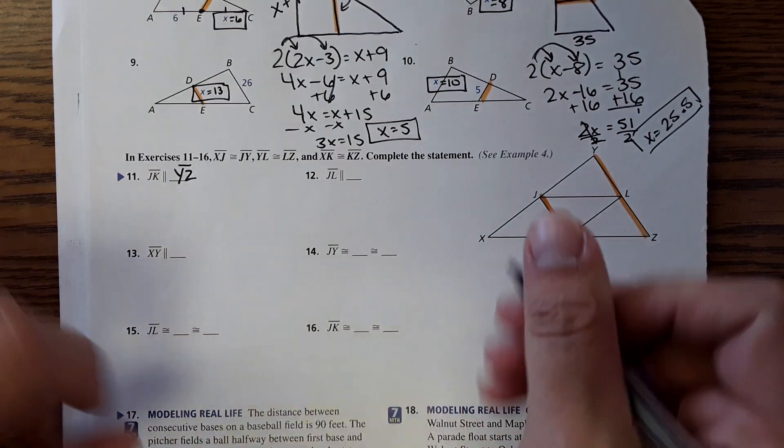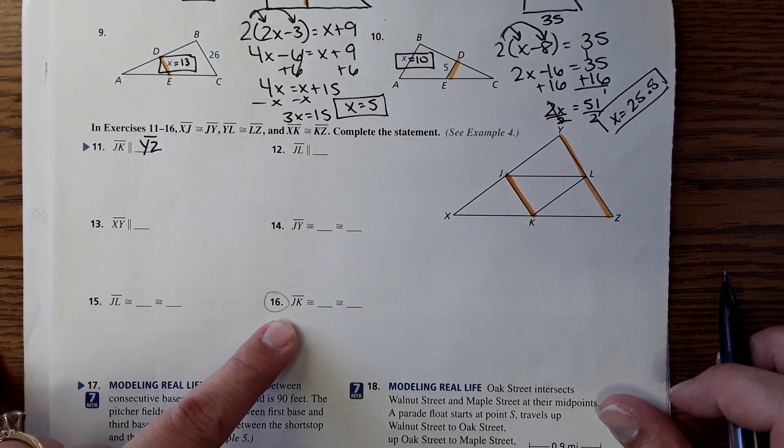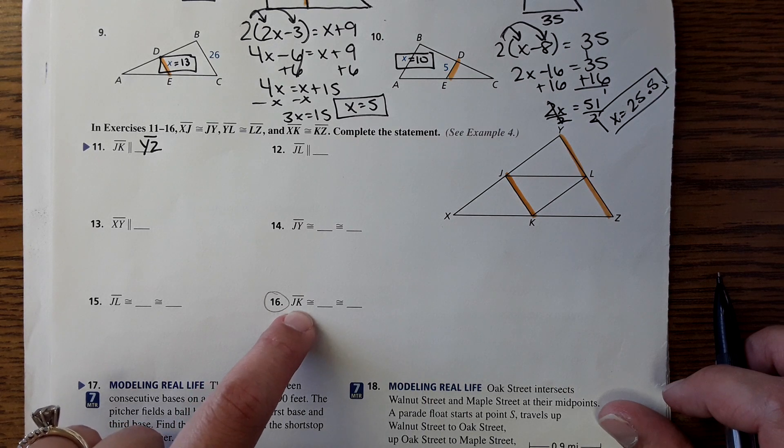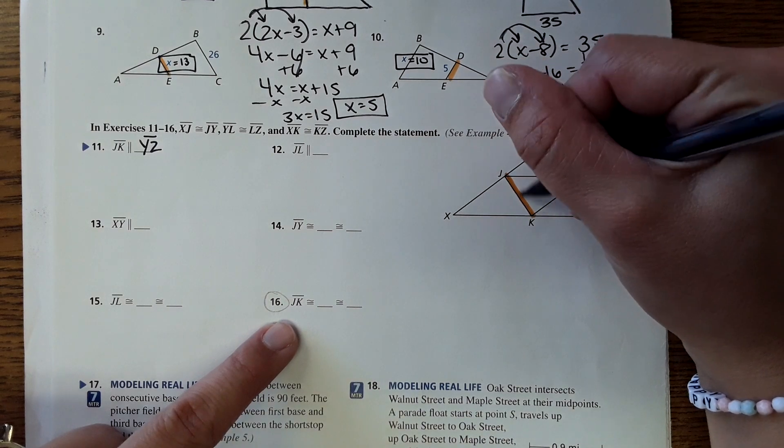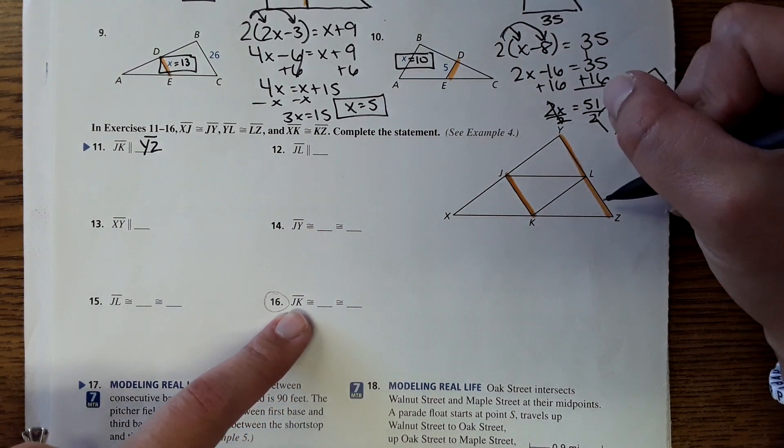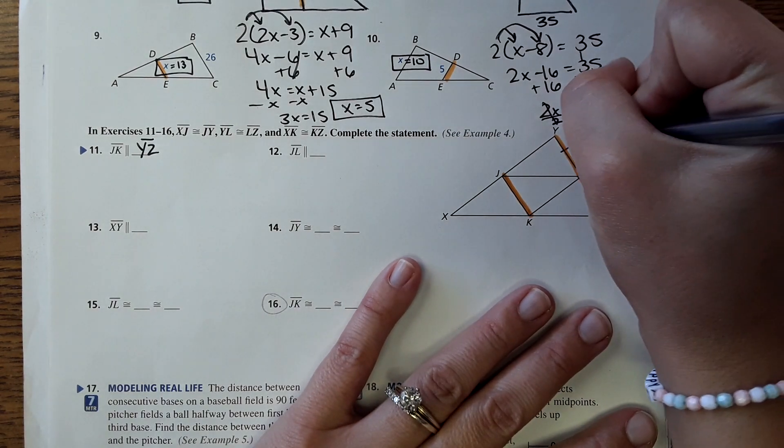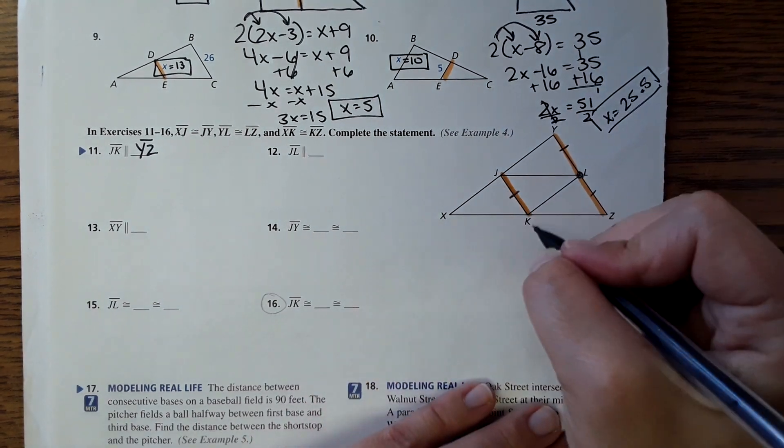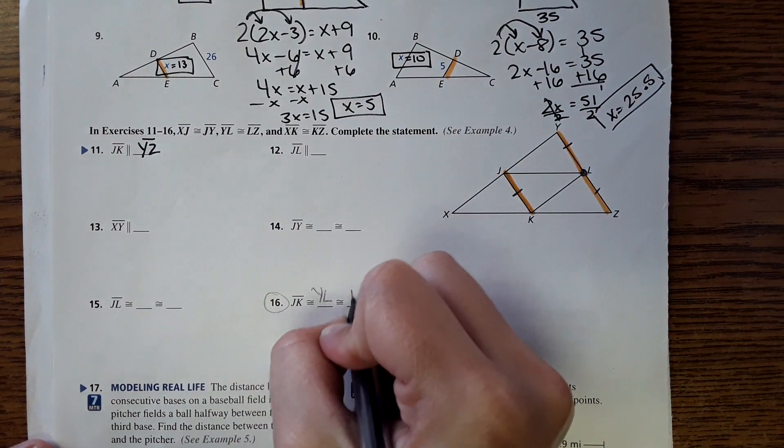Okay we're gonna skip to number 16 before I draw all over this. So JK is wondering what it's congruent to or what is the same length as. So here I have JK highlighted right here. If I look at this, remember this is double the length and this also hits at the median of that segment, so therefore this is the same length as this which is also the same length as this. So JK would then be equal to YL and LZ.